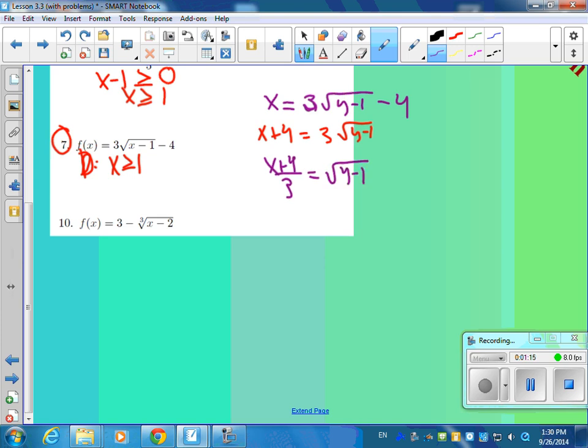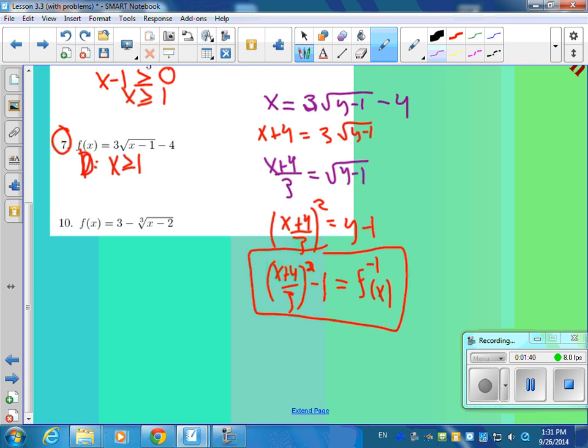Okay. Then what are you going to do? I'd square both sides. And then all you have to do to solve for y, or the inverse, is x plus 4 over 3 squared plus 1. There is my inverse.